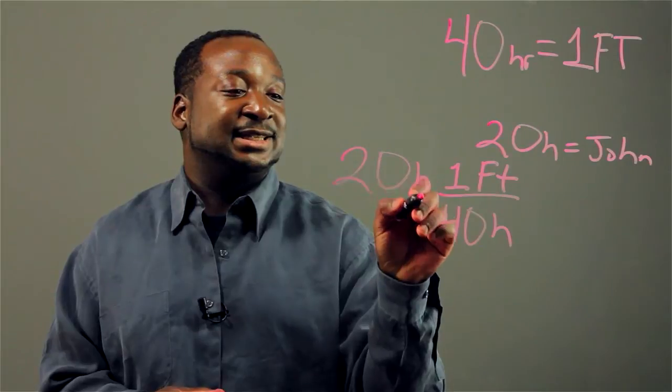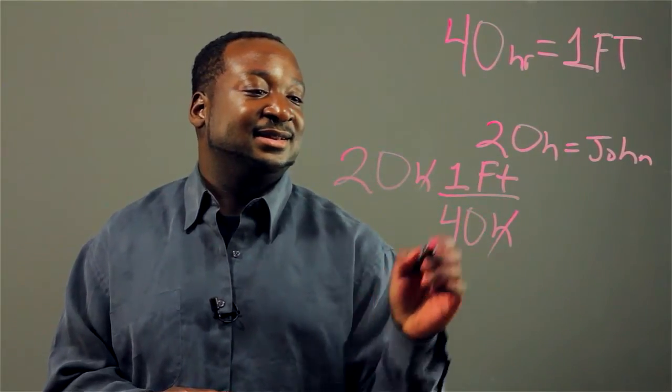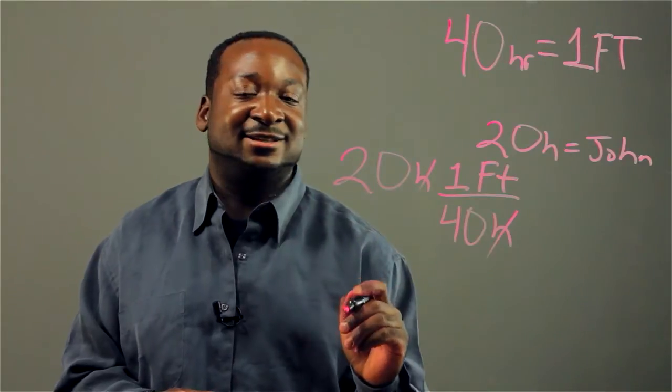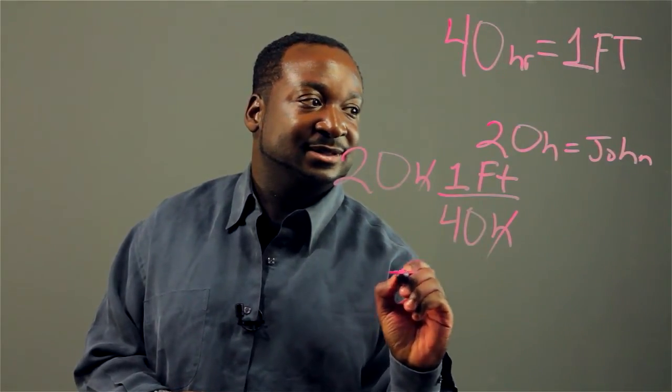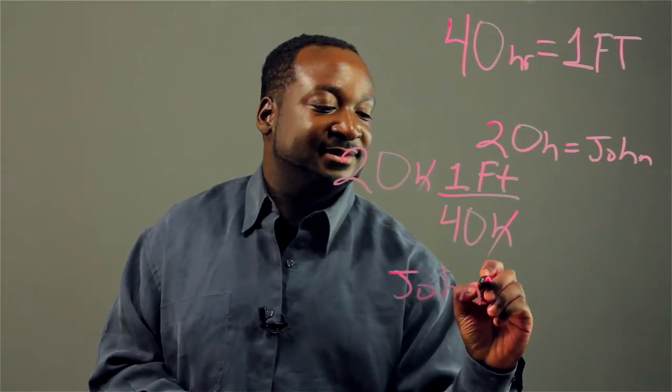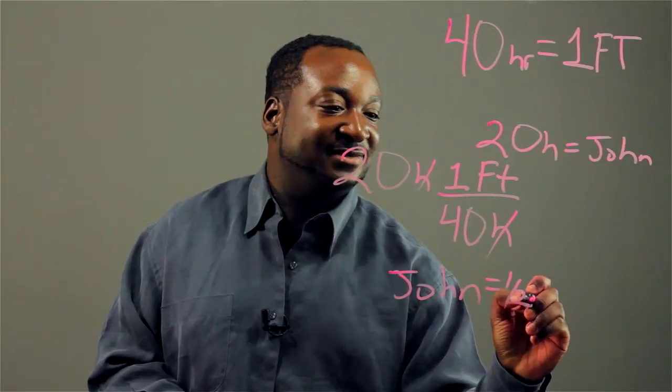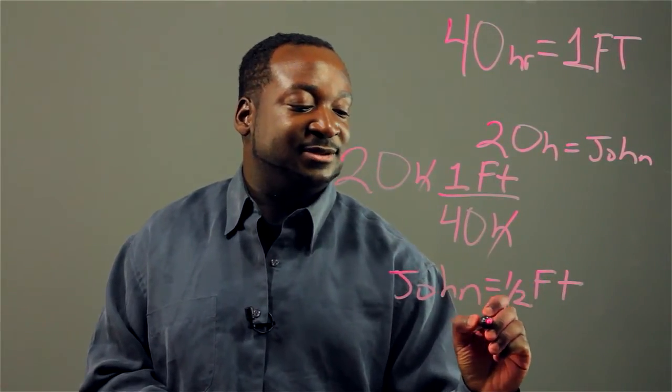And from here on it's simple math. The H's for hours cancel out, so we get John's full-time equivalent equals one-half of a full-time employee.